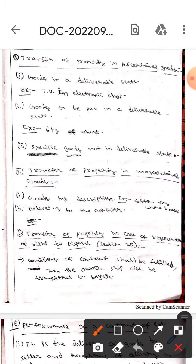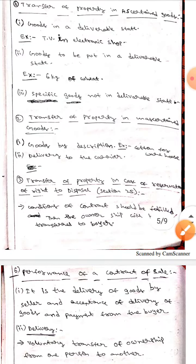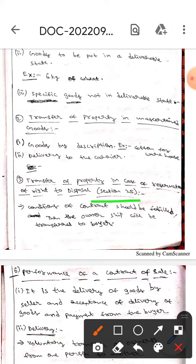Where the next one is delivery to the carrier. Where the next one is transfer property in case of reservation of right to disposal. It is mentioned in section 25.